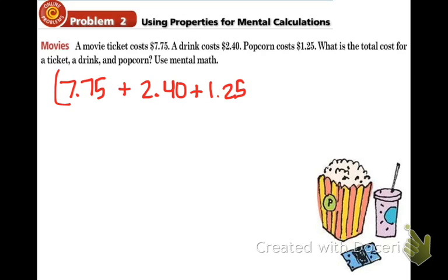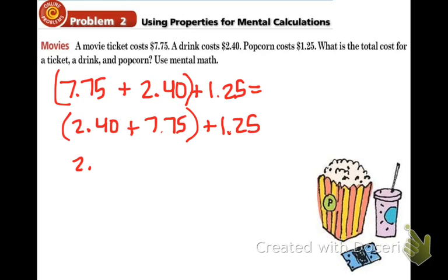So let's put some grouping symbols around this. Well, by our associative property, we can change the grouping symbols, and we can also use the commutative property to reverse the numbers inside the parentheses. So I'll show you what I mean: 2.40 + 7.75 + 1.25. Do you see how the numbers are the same, it's just a little bit different order? Now we're going to change the parentheses, so we're going to group it around (7.75 + 1.25).